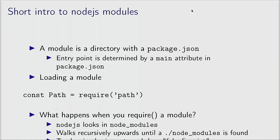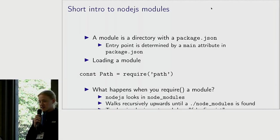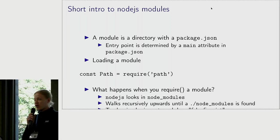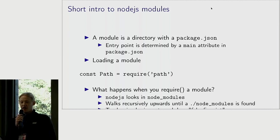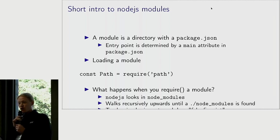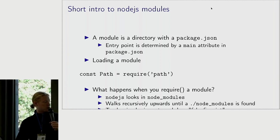So what happens when you do require a module? Node.js first checks in your local node_modules path, which everyone has seen before. It's not so well known that it also walks recursively upwards in the directory tree until it finds another node_modules. And thirdly, it falls back to the NODE_PATH environment variable. We can use this to some interesting effect, which we will see later.